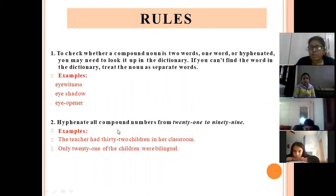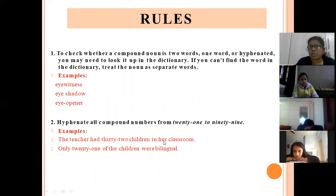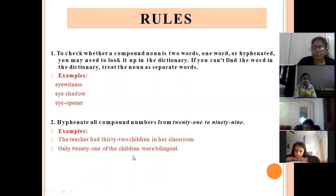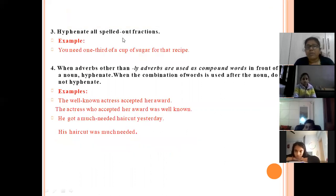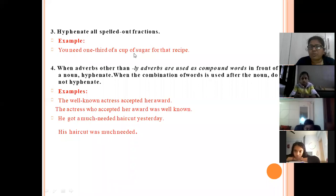Whenever you are using the numbers from 21 to 91, we always put a hyphen. Like: 'The teacher had thirty-two children in a classroom. Only twenty-one of the children were bilingual.' Next, when spelling out fractions, also use a hyphen — like 'you need one-third of a cup of sugar for that recipe.'